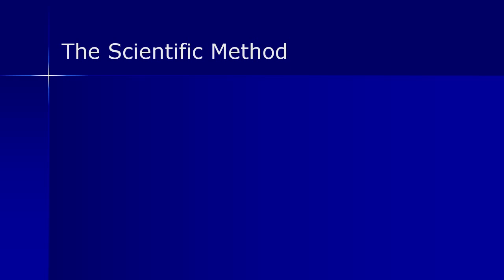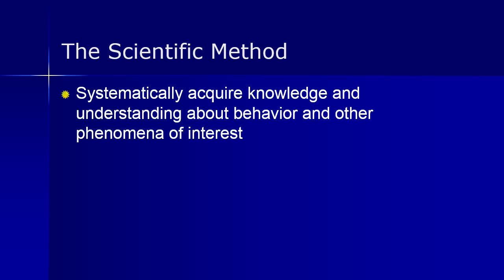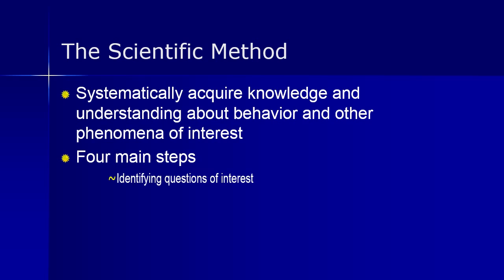One way to conduct research is by using the scientific method. Where research is the systematic inquiry aimed at the discovery of new knowledge, the scientific method is the systematic acquisition of that knowledge — the ways we go about understanding a particular research area. For psychology, it's about understanding humans and animals and their behaviors. There are four main steps. We start with identifying a question of interest — what do you want to know about — which will be important when finding a topic for your research paper.